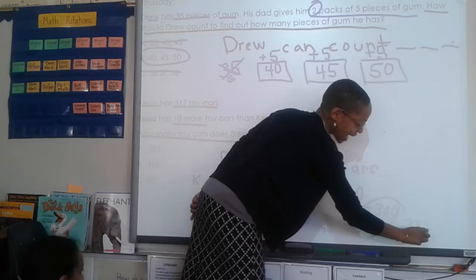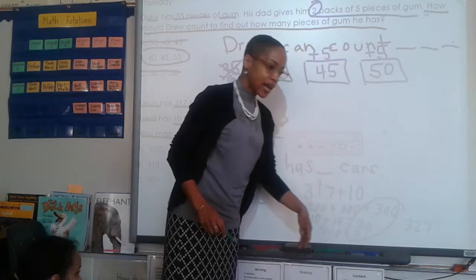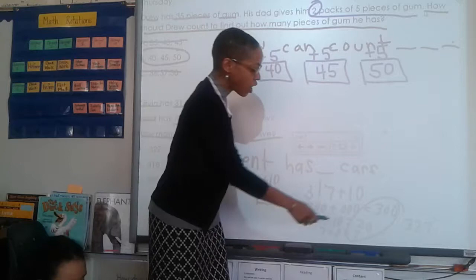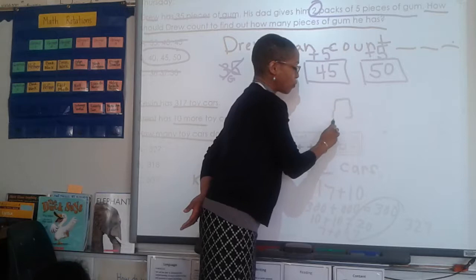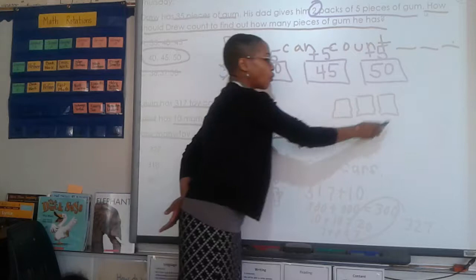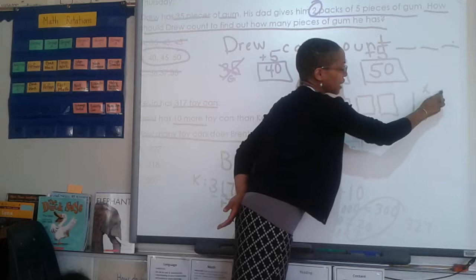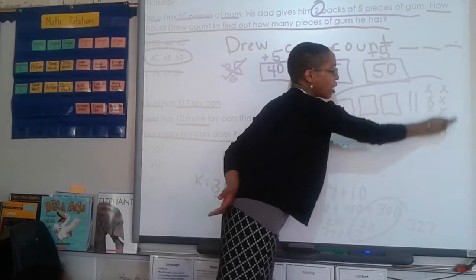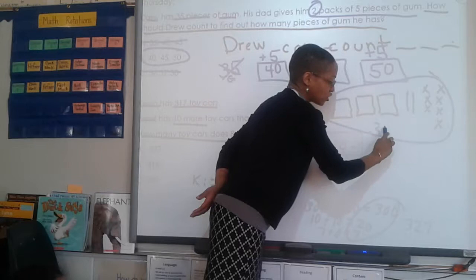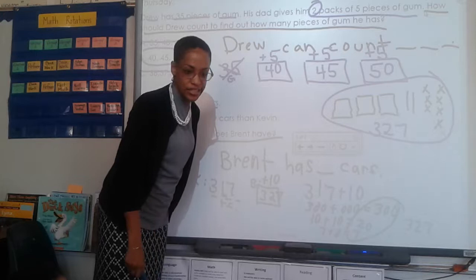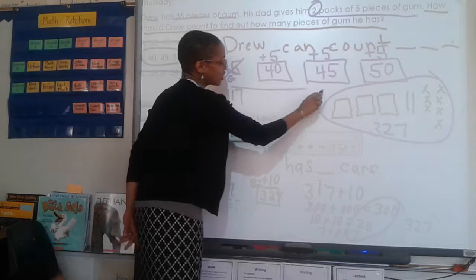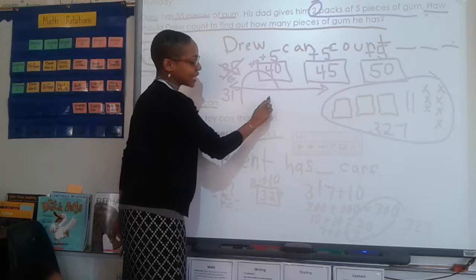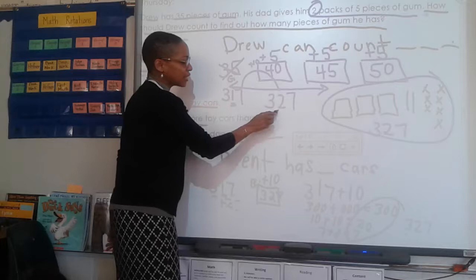You're all getting good at the place value strategy. Let's see another strategy - I could draw it out using base ten blocks. I could draw 317: one hundred, two hundred, three hundred, one ten, and seven ones. And then if Brent has ten more, I can add another tens rod. That gives us 327. There's also the number line strategy - starting at 317 and making a tens jump, 317 turns into 327, where the tens place is the only number that changes. Great job.